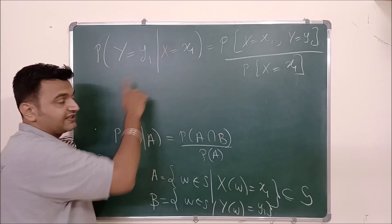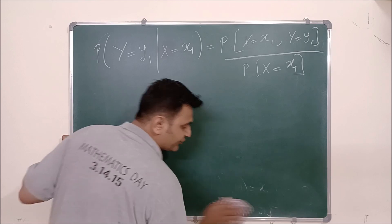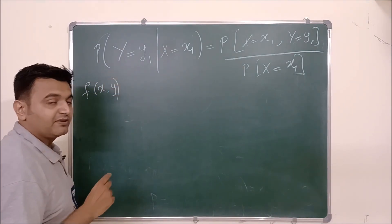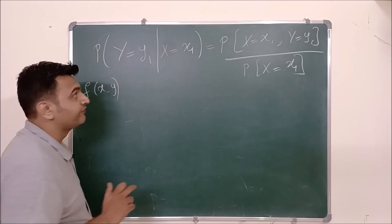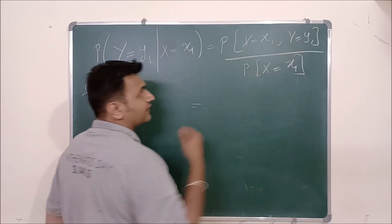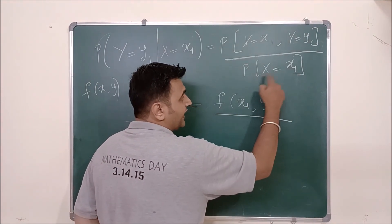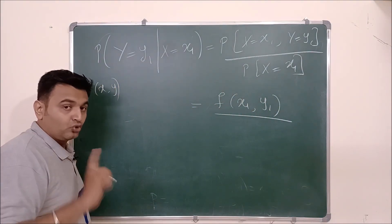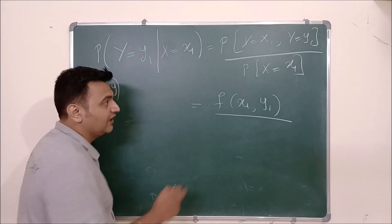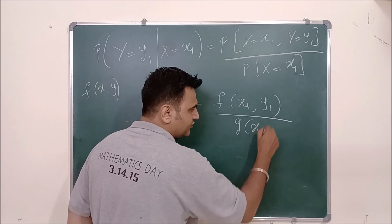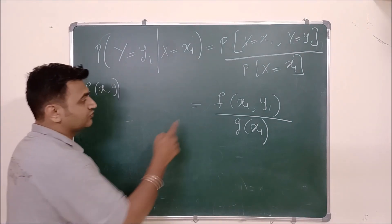If f(x,y) is a joint probability distribution — whether discrete (joint PMF) or continuous (joint PDF) — then the probability that X=x₁ and Y=y₁ is f(x₁, y₁). The probability that X=x₁ with no condition on Y means we fix x and vary y, which is the marginal distribution. Let us denote this marginal distribution as g(x₁).